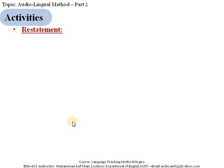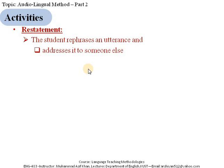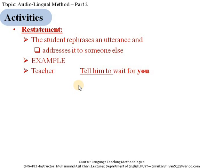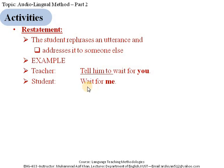Another activity in audio-lingual method is restatement, where the student rephrases an utterance and addresses it to someone else according to the instructions. For example, the teacher says 'Tell him to wait for you,' and the student rephrases it, saying 'Wait for me.' The student is not repeating the exact same words from the teacher but rephrasing the utterance from the source. This activity is called restatement.